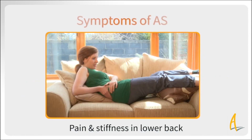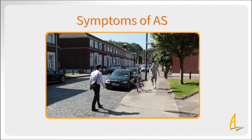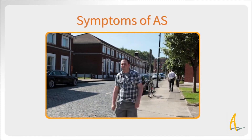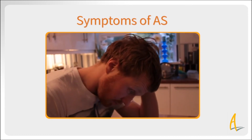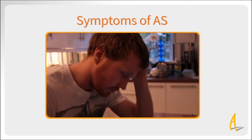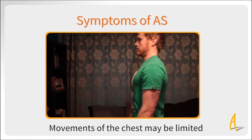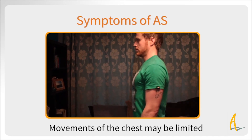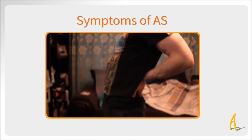AS generally begins with pain, ache, and stiffness, usually in the lower back, worsening over weeks or months. Pain and stiffness is worse in the mornings and during the night, but may improve with light exercise. After a number of weeks, the pain will generally go, then reappear, possibly further up the back. Movements of the chest may also be limited. These bouts of pain and stiffness may come and go over a number of years, and eventually the inflammation will die down, though the restriction of spine and chest movement persists.